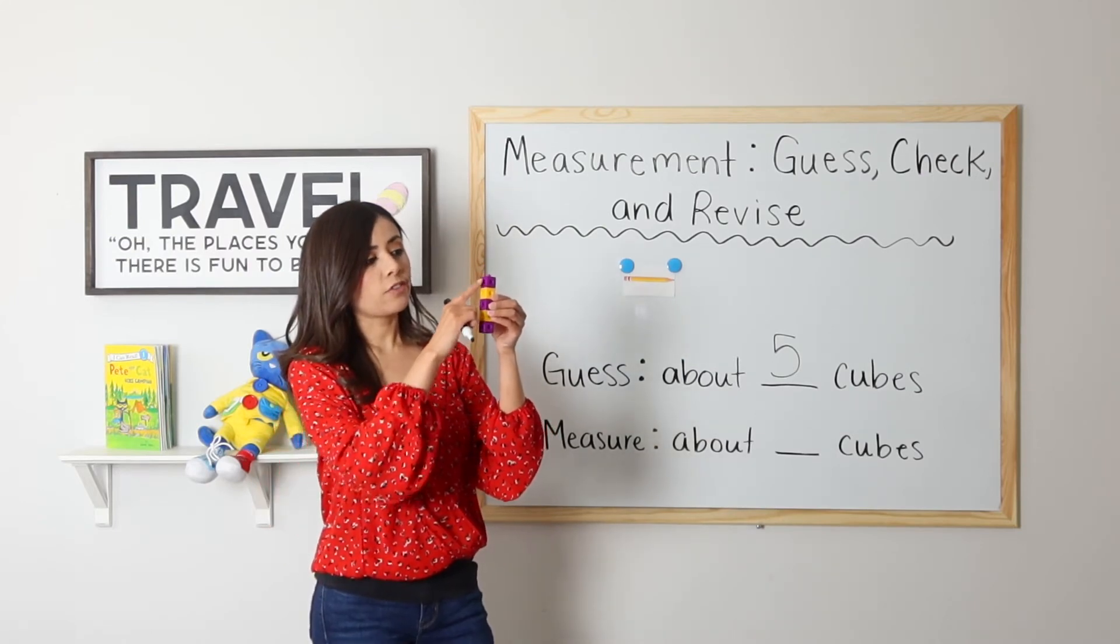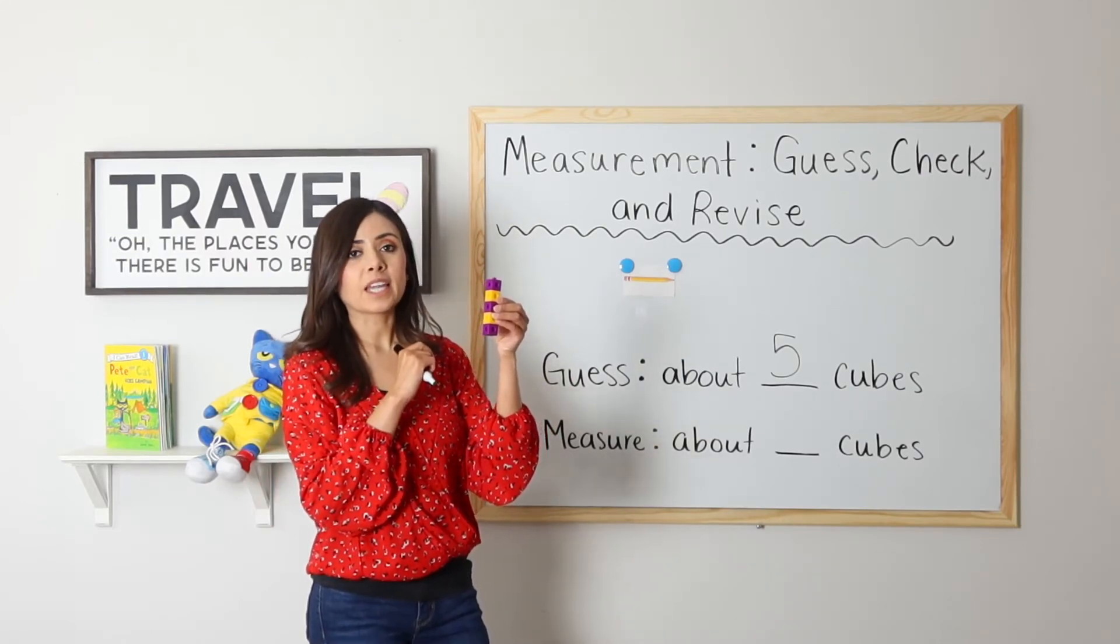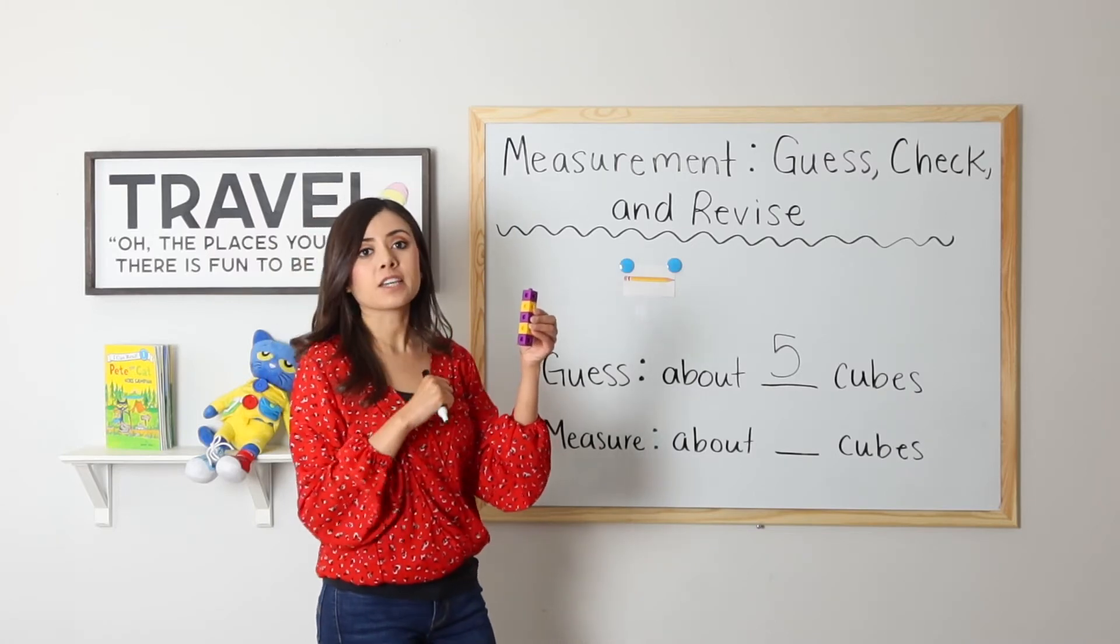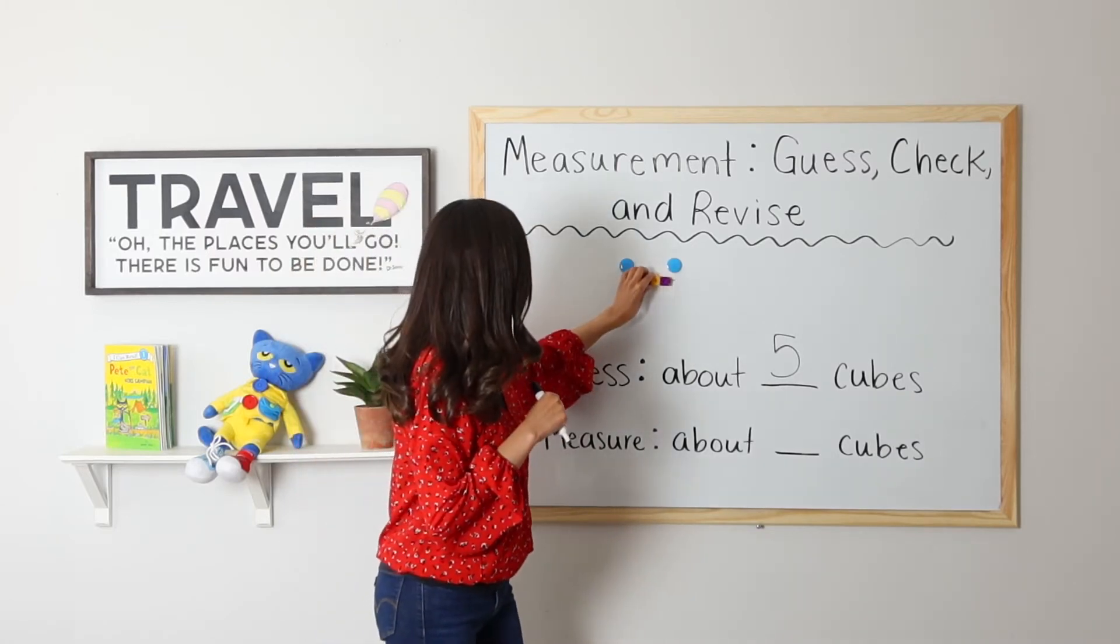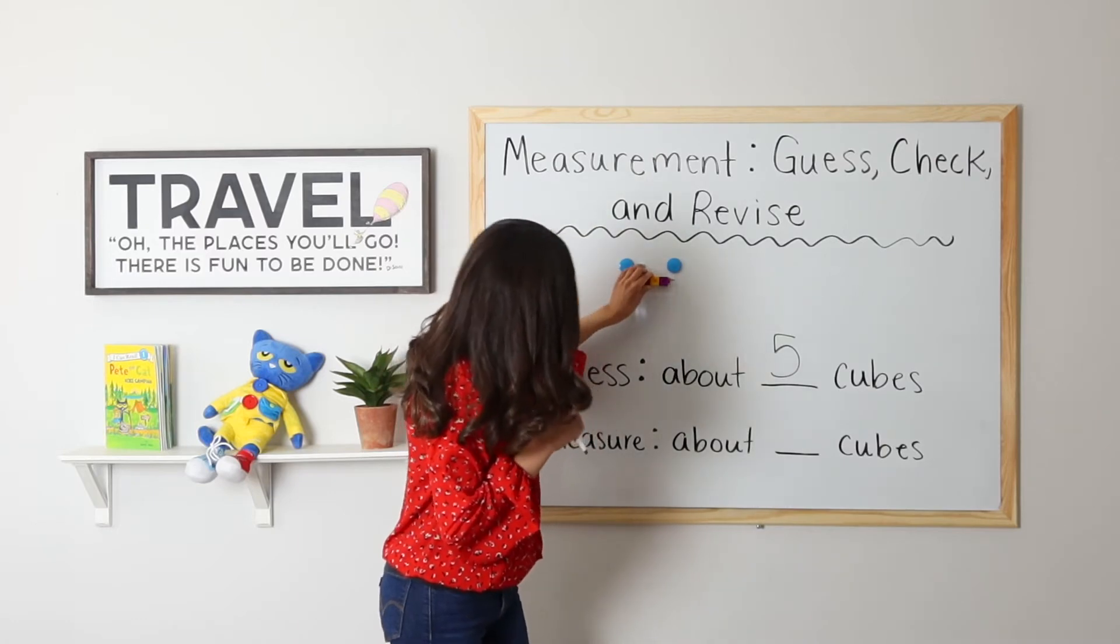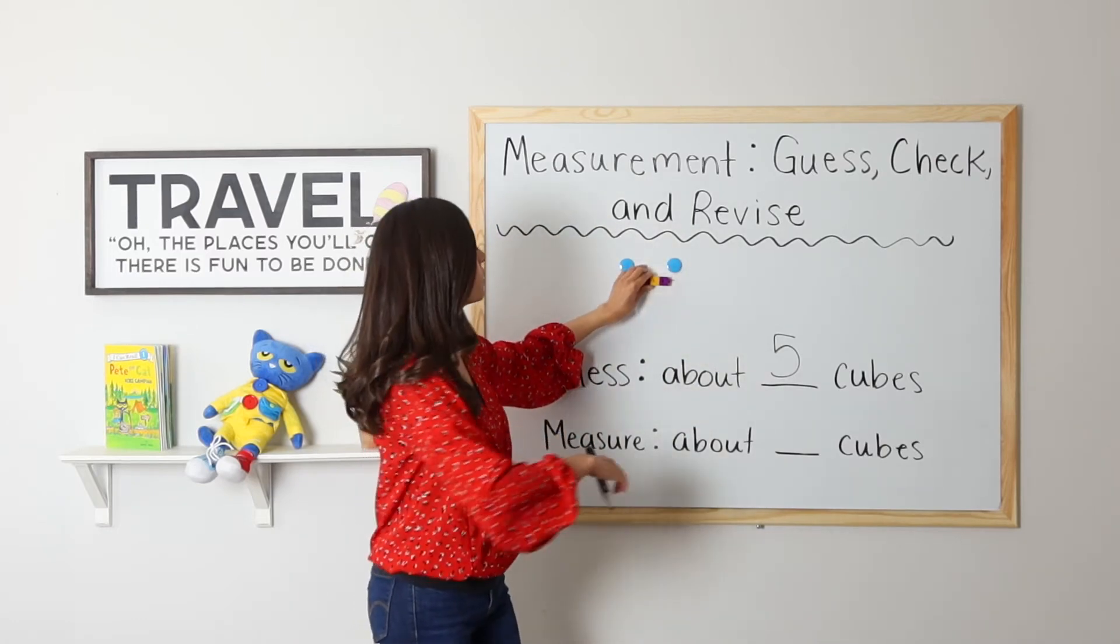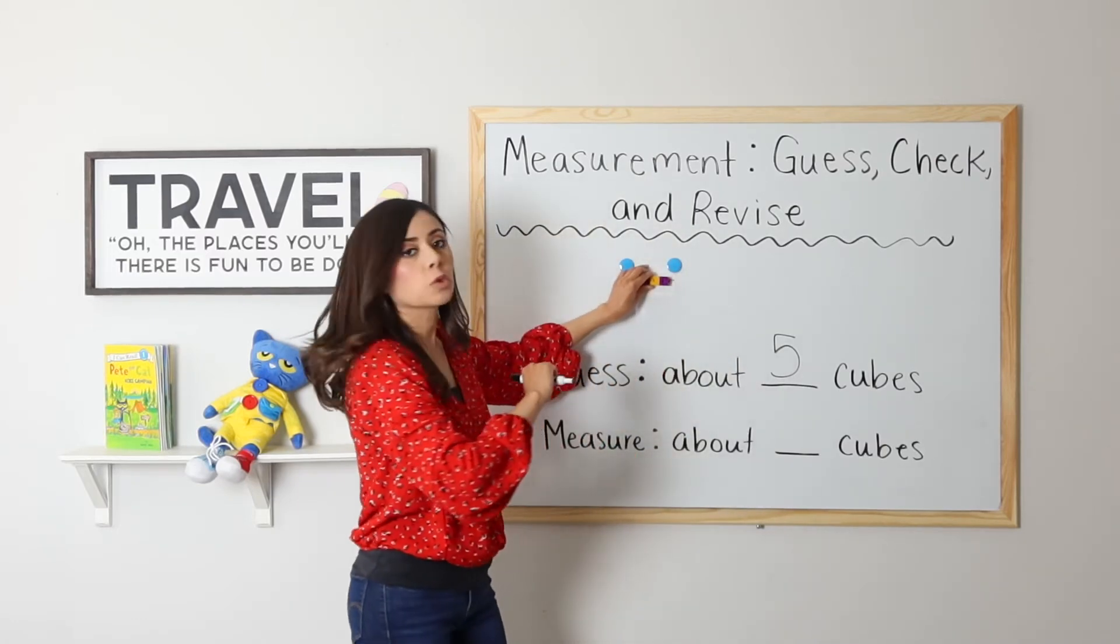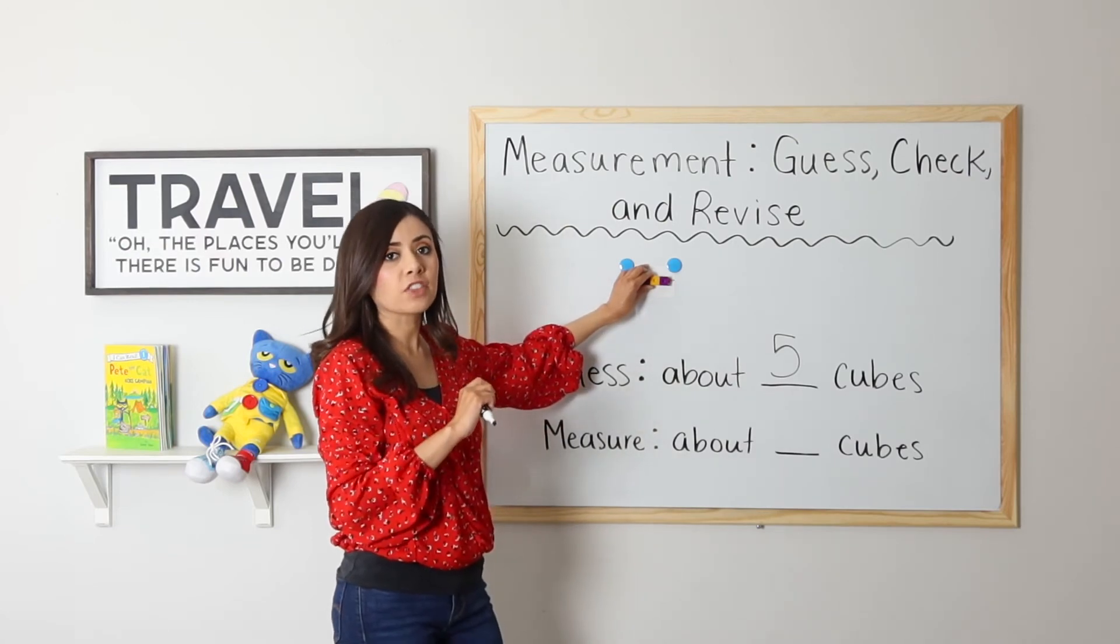So I have five cubes in my hand. One, two, three, four, five. I will go ahead and connect from end to end and see if five is correct. Oh, I actually still have a good amount of space over here. I'm going to add one more and see if that looks better.